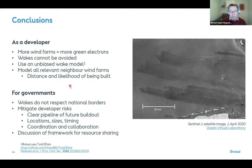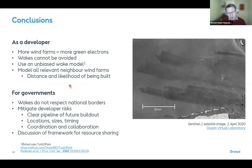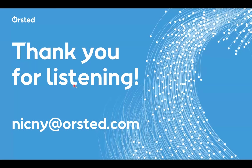If you're a government, you need to understand that wakes do not respect national borders. From a development perspective, mitigate the risk future neighbors represent by maintaining a clear pipeline: where will neighbor farms come, what sizes, what timing? There's an opportunity to turn risk into opportunity through coordination and collaboration — not just across countries, but between governments and developers in figuring out where future wind farms should be located.